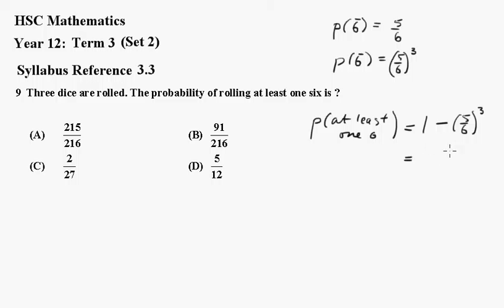And of course that gives me 91 over 216, and that is B.